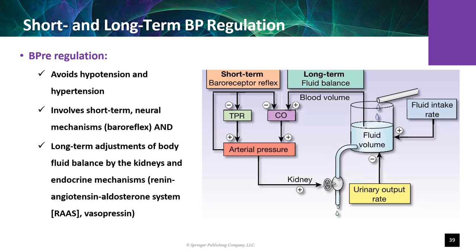Long-term mechanisms are primarily endocrine and include hormones that affect the renal system and fluid balance: aldosterone secreted by the adrenal cortex, vasopressin secreted by the posterior pituitary, and natriuretic peptides secreted by the heart. These mechanisms alter blood volume by modulating fluid output — renal sodium and water excretion — with fluid intake via the hypothalamic sodium and water appetite. Long-term control of blood pressure over hours and days is accomplished by sensors that detect circulating blood volume and blood pressure and adjust fluid intake and renal fluid excretion to alter total body fluid volume.